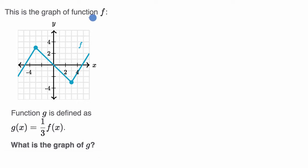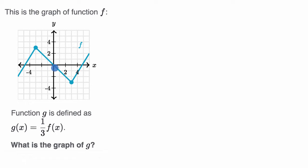We're told this is the graph of function f, and function g is defined as g(x) = (1/3)f(x). What is the graph of g? This is a screenshot from Khan Academy's mobile app — it has multiple choices, but we'll just try to sketch it. Pause this video and imagine what you think the graph of g is going to look like, or at least how you would tackle it.